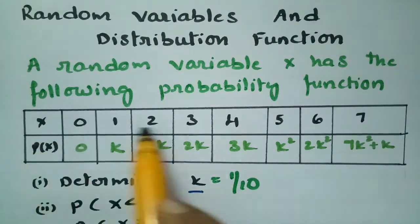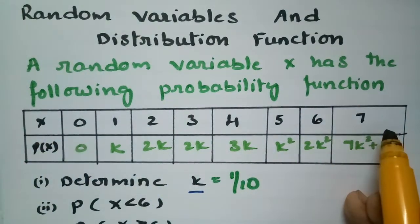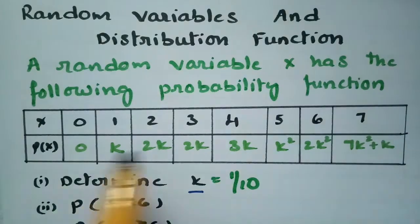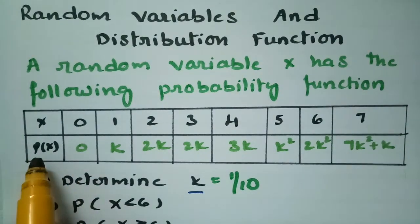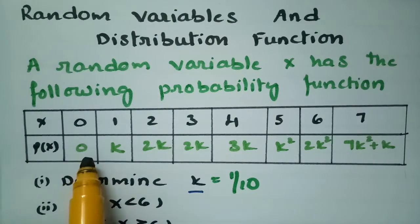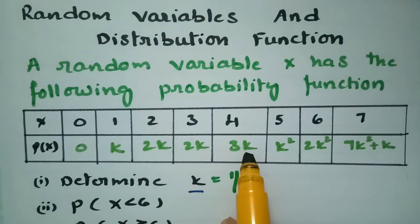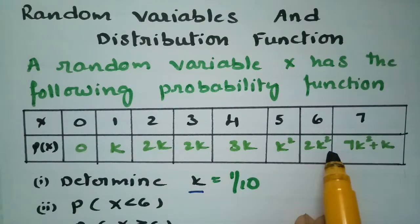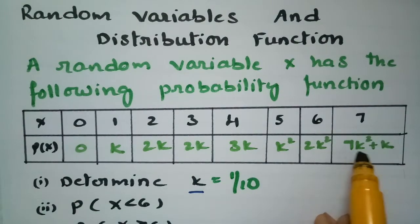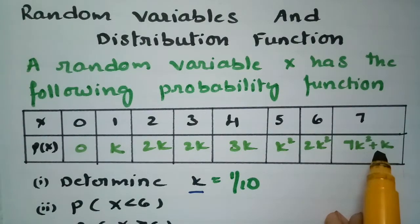These are all the X values from 0 to 7, and this is the probability distribution function: 0, k, 2k, 2k, 3k, k², 2k², and 7k² + 1.